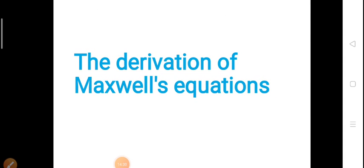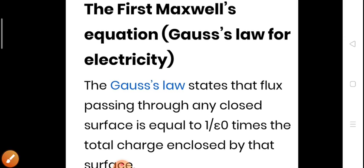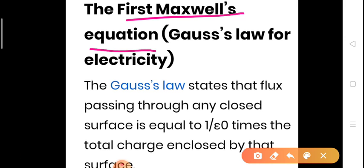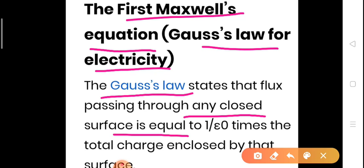Now we will do the derivation of Maxwell's equations. The first Maxwell equation is Gauss's law for electricity. The Gauss's law states that the flux passing through any closed surface is equal to 1 over epsilon-naught times the total charge enclosed by that surface.